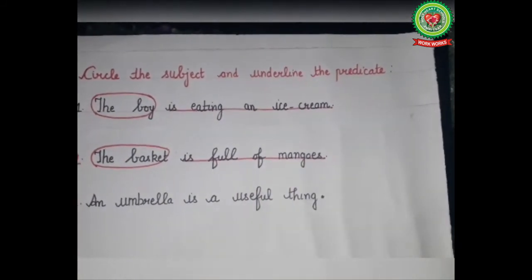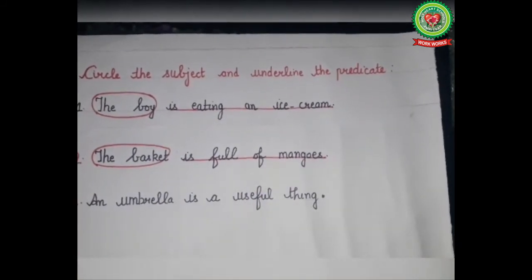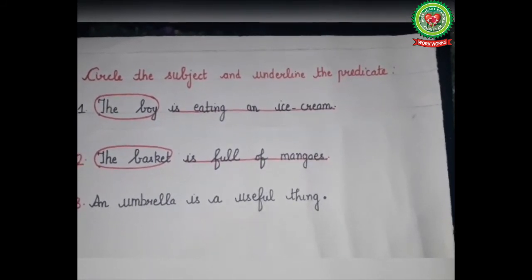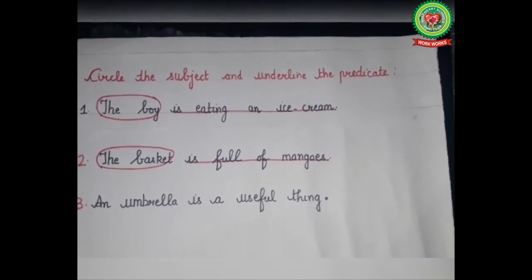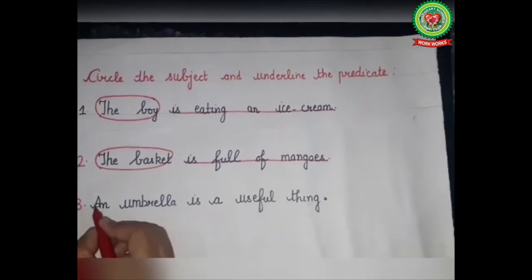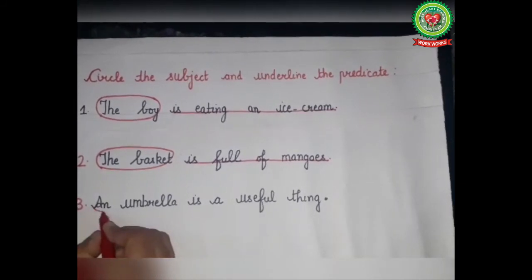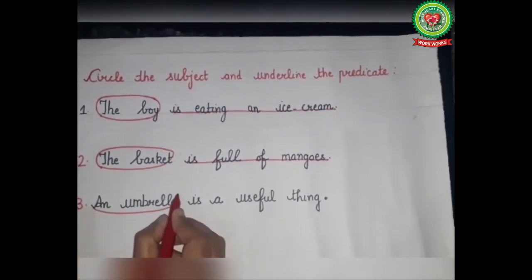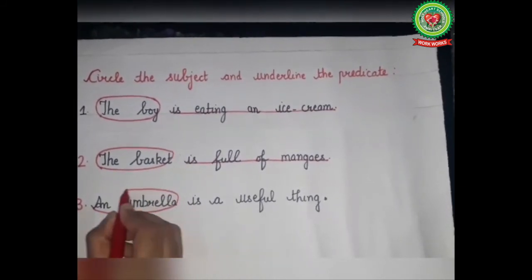Let us take one more example. 'An umbrella is a useful thing.' About whom we are talking in the sentence? The answer is 'an umbrella,' so we will circle 'an umbrella' as the subject of the sentence.